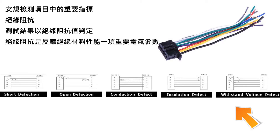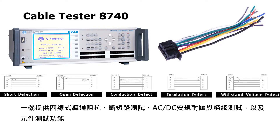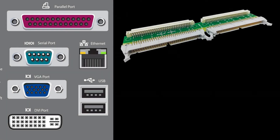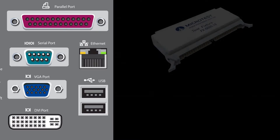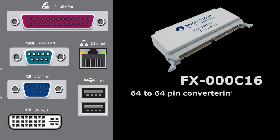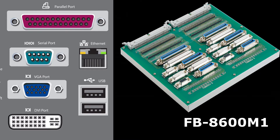A desktop and portable instrument that includes conduction, hipot, component, and multi-functional testing can fulfill cable harness inspection. The Microtest 8740 provides the converter fixture as an option, as well as a universal fixture board or customized fixtures.